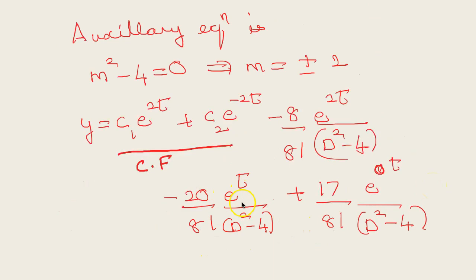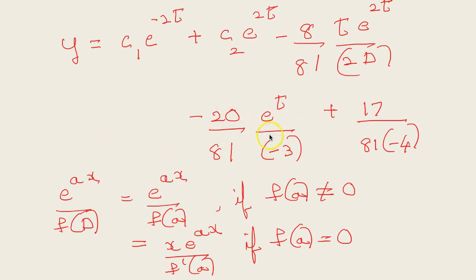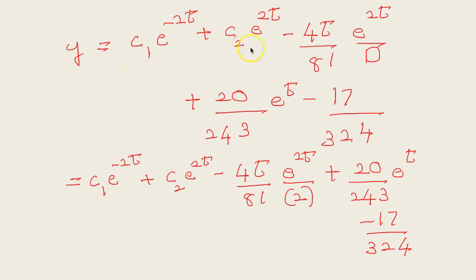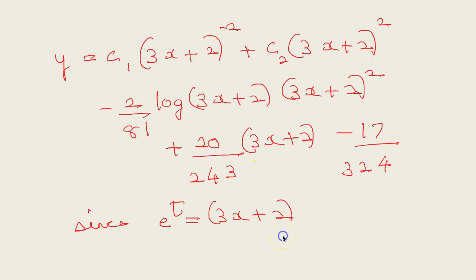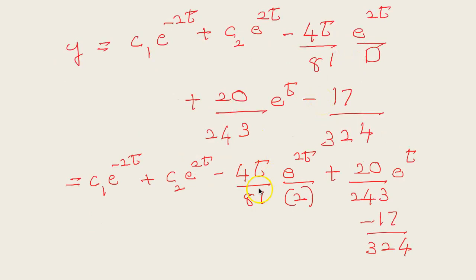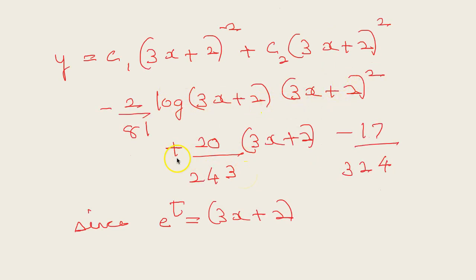Substituting D = 1 gives −20/81 × e^t/(−3) = 20/(243)e^t, and D = 0 gives 17/81 × 1/(−4) = −17/324. Combining: y = c₁e^(−2t) + c₂e^(2t) − (4t/81) × (1/2)e^(2t) + (20/243)e^t − 17/324. Back-substituting e^t = (3x+2): y = c₁/(3x+2)² + c₂(3x+2)² − (2/81)log(3x+2)(3x+2)² + (20/243)(3x+2) − 17/324.